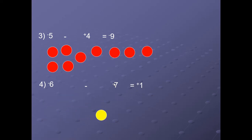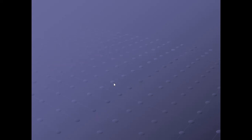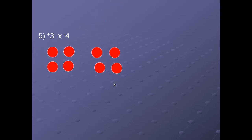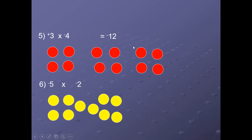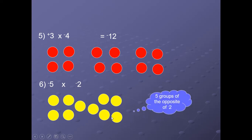3 × (−4): 3 groups of negative 4 coins, giving minus 12 — one group, two groups, three groups. For minus 5 × minus 2: take 5 groups of the opposite of minus 2, which is plus 2. Five groups: 1, 2, 3, 4, 5. We get plus 10. So 5 groups of the opposite of minus 2 gives plus 10.